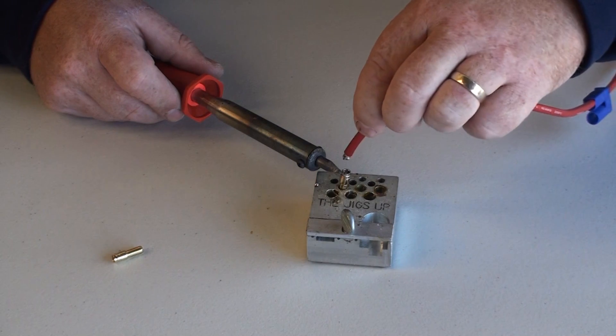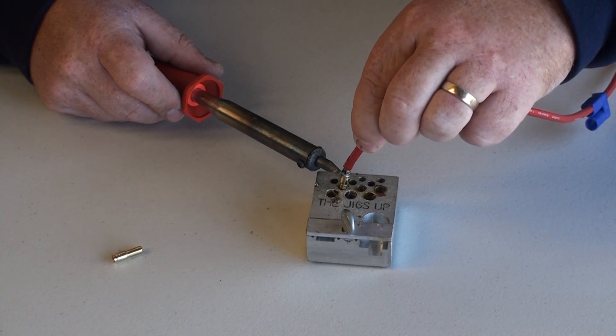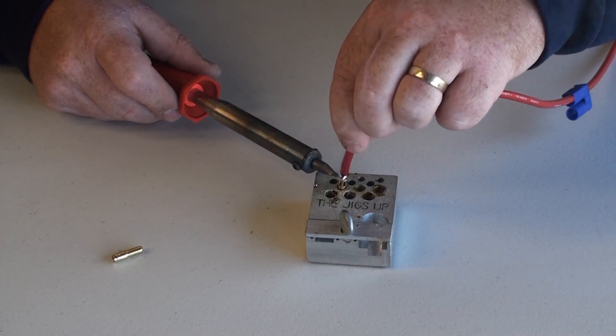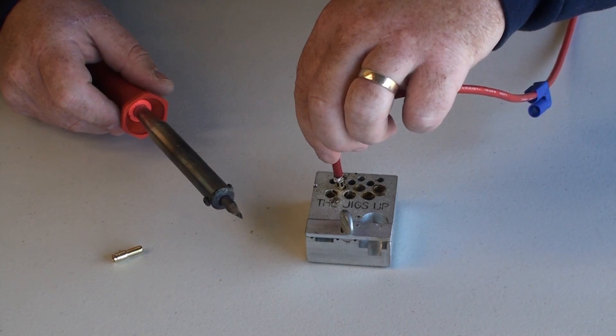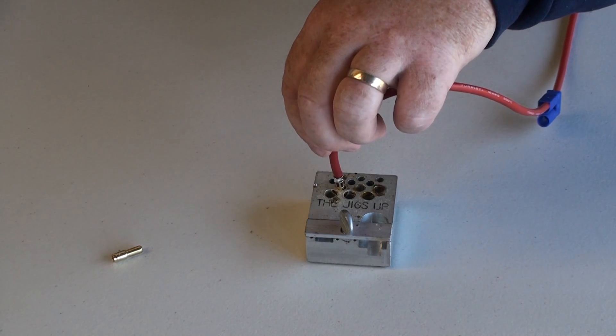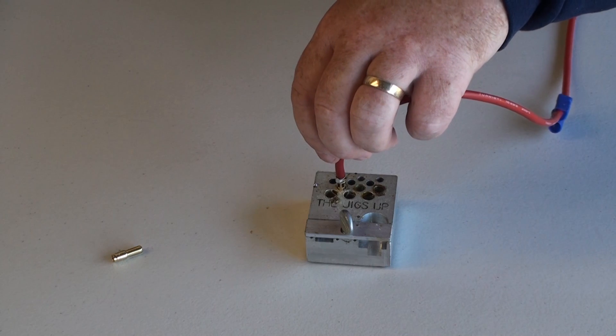Once that's done, drop the ESC lead into the solder. You'll see it melt, remove the heat, keeping it nice and still until the solder hardens.